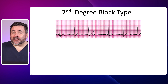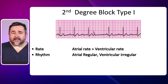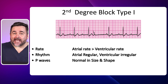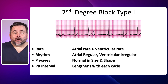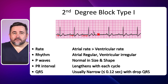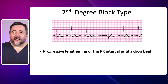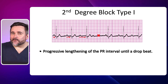Let's look at second degree block type 1. The atrial rate is more than the ventricular rate. The atrial rhythm is regular versus the ventricular rhythm which is irregular, as there are dropped beats. The P waves are normal in size and shape, and the PR interval lengthens with each cycle — it may be slight lengthening — until you see a dropped beat. The QRS is usually narrow, meaning three small boxes or less. The main concept to remember for your NCLEX in second degree block type 1 is that there is a progressive lengthening of the PR interval until you have a P wave that is not followed by a QRS complex.